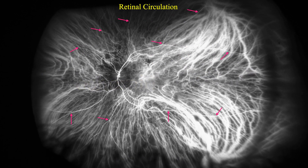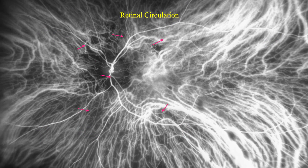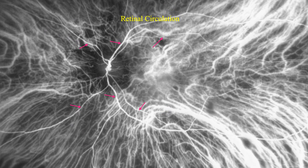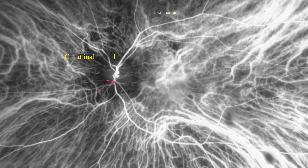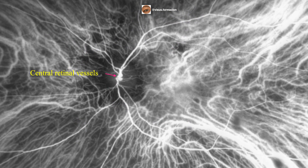In this photograph, we can see the two superimposed circulations, and indicated with the arrows, we specify the retinal circulation. Through the optic disc pass the central retinal vessels — the central retinal vein and artery.